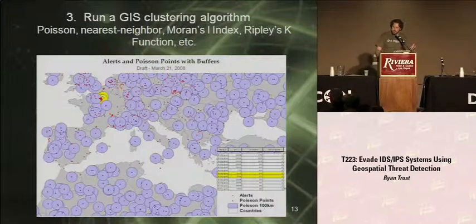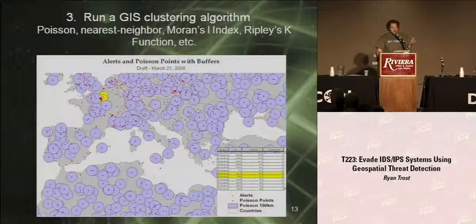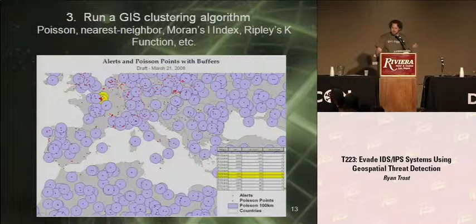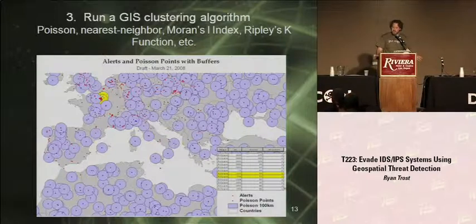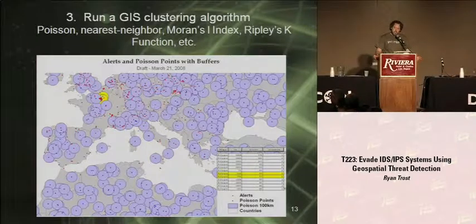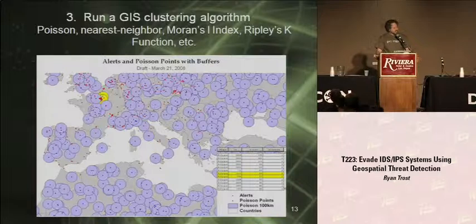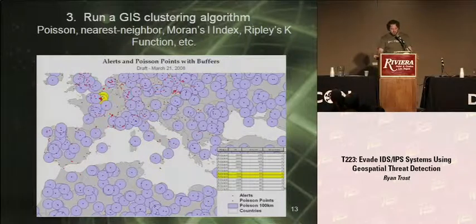This is where the actual juice comes into play. Once you've narrowed that IDS data set down to a volume you can handle, you want to run it through a GIS clustering algorithm. There are multiple clustering algorithms out there: Poisson, nearest neighbor, Moran's I index, Ripley's K function — any of these you can play with. What I did in my research is I hired three independent GIS firms and basically gave them a data set of approximately a year — 450,000 IDS alerts — and told them to tell me what's the best GIS algorithm to use. They each came back with a different algorithm, so I'm still in the testing phase. I'm leaning more towards the Poisson — I don't have time to dive into it specifically, but in Q&A afterwards I can show you how it works.